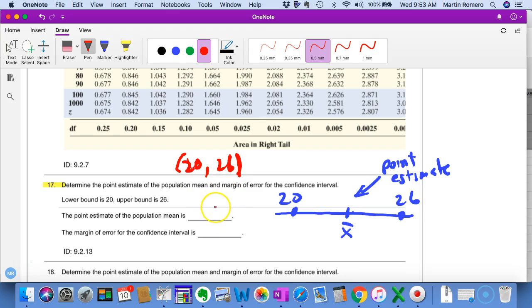In this case, what would the point estimate be? Well, how did we create this 20 to 26? The point estimate would be the value right in the middle. That's the point estimate. This is X bar, and what's right in the middle of 20 to 26? That's 23.